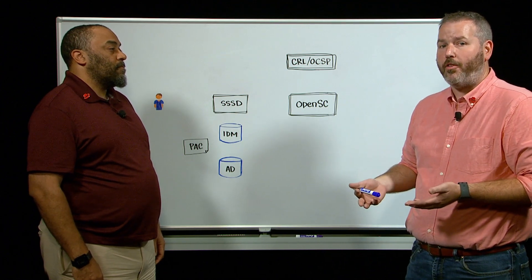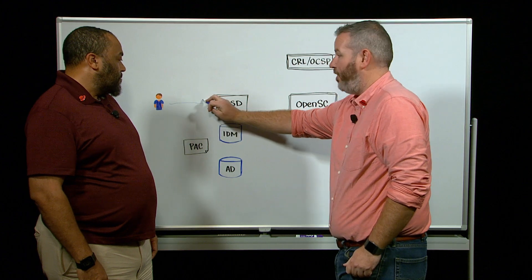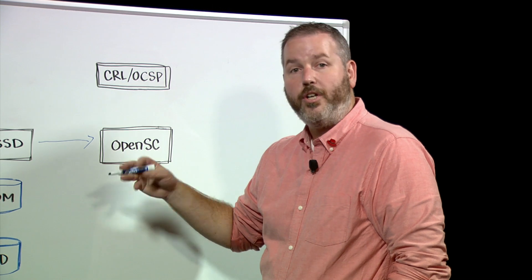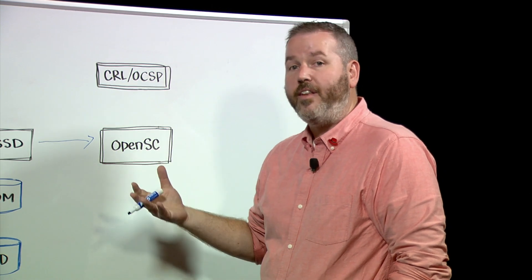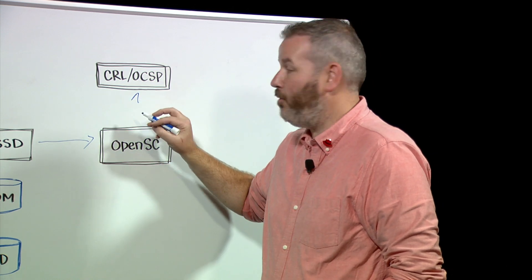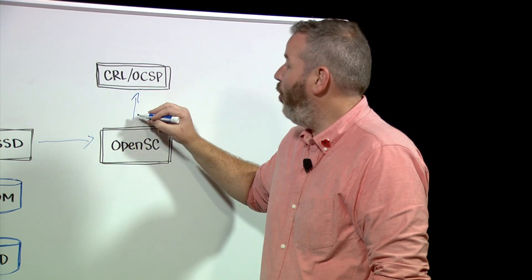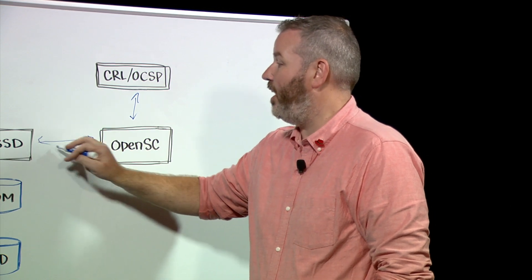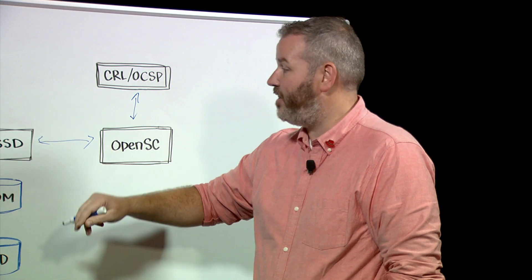So when you go about doing your smart card authentication, the user is going to authenticate to the Linux host via SSSD. SSSD is then going to check OpenSC. OpenSC is then going to validate that the certificate hasn't expired, and it will also check your CRL and OCSP responses to make sure that it hasn't been revoked.